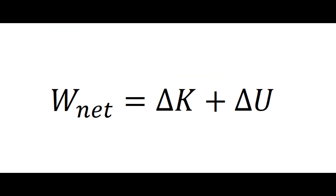W net is equal to delta K plus delta U. This formula means that the net work done is equal to the change in kinetic energy and the change in potential energy. This could also be interpreted as a conservation of energy.